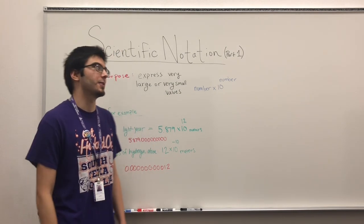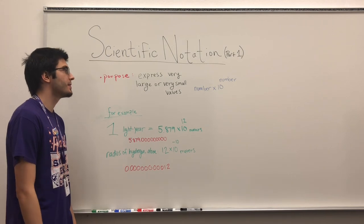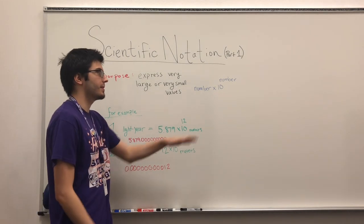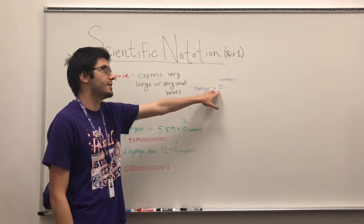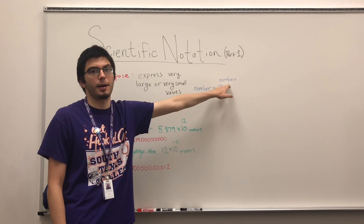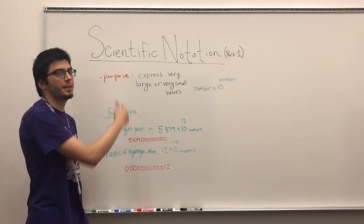Alright, so now we're going to start talking about scientific notation. What is scientific notation? It's a number times 10 to some power.